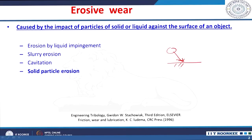Erosive wear is mainly caused by the impact of solid particles or liquid against the surface of an object. If you have certain solid particles impinging on a surface, the material is removed from this surface — that material removal is called erosion or erosive wear. Erosive wear can happen in many ways: by liquid impingement, a mixture of particles and fluid giving slurry erosion, or cavitation erosion where cavities are formed, or solid particle erosion where several particles impinge on the surface leading to material removal.